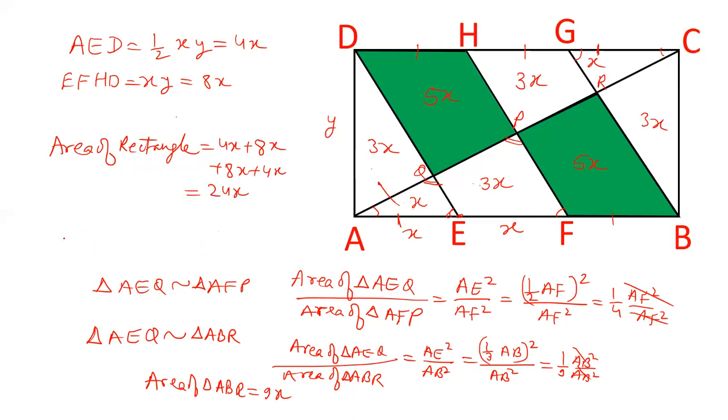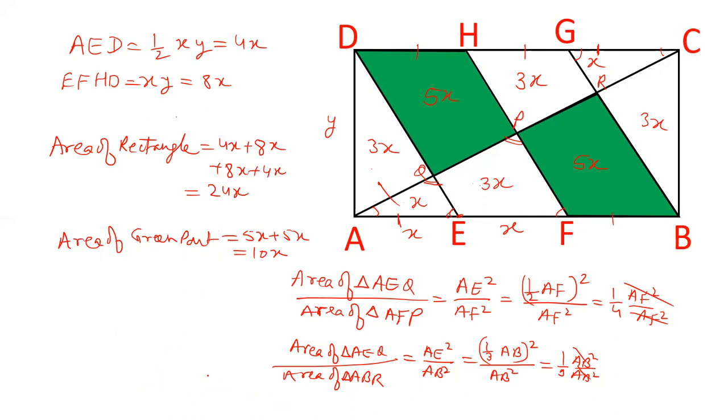And area of green region, that is equal to 5x plus 5x. That is 10x. And therefore area of green region upon area of rectangle is equal to 10x upon 24x.